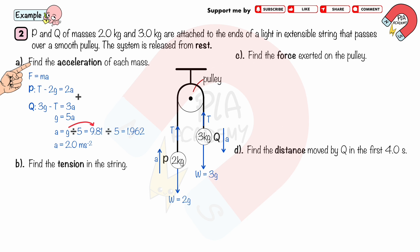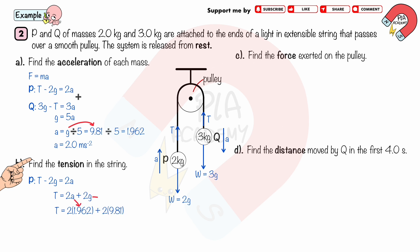Part b: Find the tension in the string. We substitute the acceleration a into the equation of motion for P. Substituting a = 1.962 and g = 9.81, we get tension T = 24 N (2 significant figures).